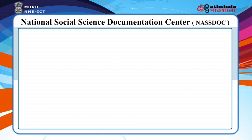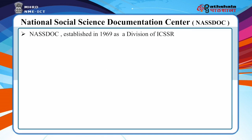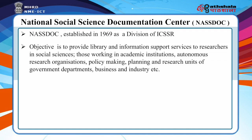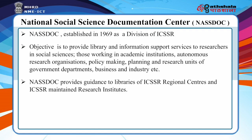A very major national level institution in the field of social sciences is the National Social Science Documentation Centre, popularly called NASDOC. NASDOC was established in 1969 as a division of ICSSR. Its objective is to provide library and information support services to researchers in social sciences — those working in research and academic institutions, autonomous research organizations, policy making, planning and research units of government departments, and business and industry. NASDOC provides guidance to libraries of ICSSR regional centers and maintained research institutions. The ICSSR-NASDOC library has a collection of reference sources including bibliographies, encyclopedias, doctoral theses, research project reports, books on social science research methodology, computer and information technology, research surveys, and all social science disciplines.